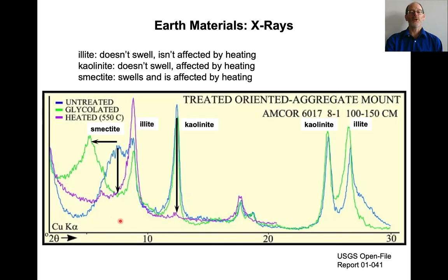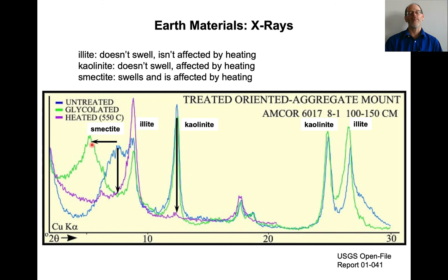So what you do is look at a complex spectrum and examine the untreated spectrum, what happens when you add glycol, and what happens when you heat it. For example, some peaks are completely unaffected by ethylene glycol — so those are illite and kaolinite peaks. One peak entirely disappears on heating — that's the kaolinite peak. And a peak that shifts to the left when you add ethylene glycol is the smectite peak. By applying these standards, you can pick apart the spectrum into contributions from illite, kaolinite, and smectite, and if you do it right you can come up with the proportions of each.